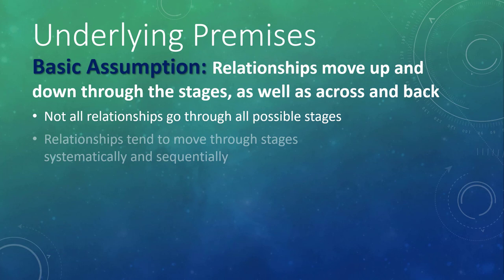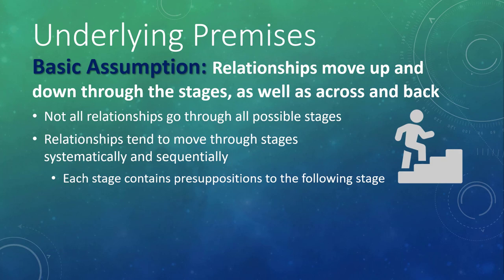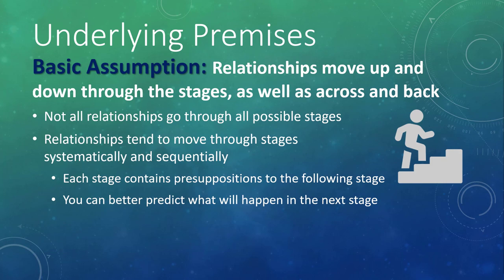There are various ways you can move through stages, but relationships tend to move through the stages systematically and sequentially—meaning you tend to go through the stages in order. Knapp suggests several reasons for this. One is that each stage contains important presuppositions to the following stage: you need to find out what you have in common to determine if there is promise for a relationship, which is helpful if you plan to move to the next stage of spending time together. A second reason is that by going through the stages in order, you can better predict what will happen in future stages. And a third is that by skipping stages, you are risking a lot.